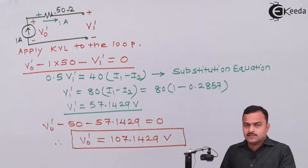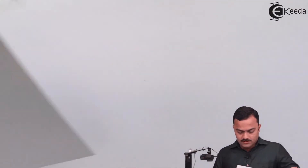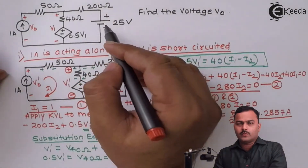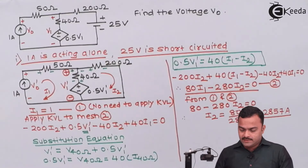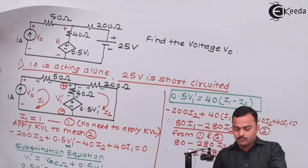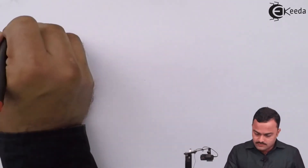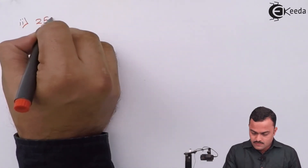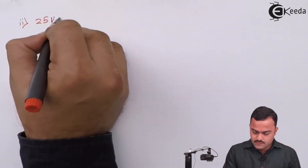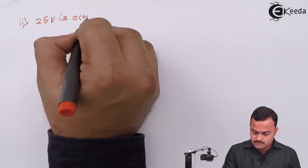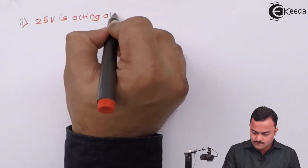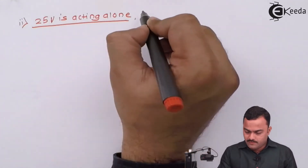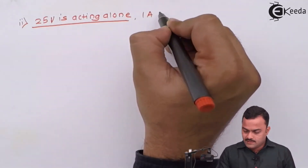Let's go ahead and take the other source. The other source present in the circuit is 25V. Now we are going to consider the effect of 25V alone by open-circuiting the 1 ampere current source. The 1 ampere source will be open-circuited because its internal resistance is infinite.